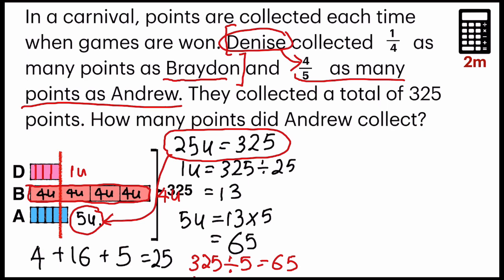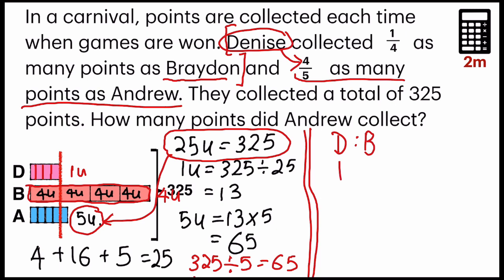This method uses a model to show how to solve it. Now I'm going to use ratio to explain again. Look at the fractions: Denise collected one quarter as many points as Brayden. So Denise had one unit, Brayden had four. And another ratio — Denise and Andrew — Denise had four units, Andrew has five.